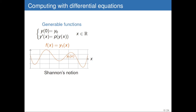A small remark: people call this analog computing. Today, analog means the opposite of digital. But at the time, analog just means you have two systems with the same equation — they are analog to each other. That's the original meaning of analog. Now, Shannon was really interested in that class of functions for its own sake. Define the class of all functions that are one component of the solution of such a differential equation. He called them generable functions. It's an extremely large class of functions.